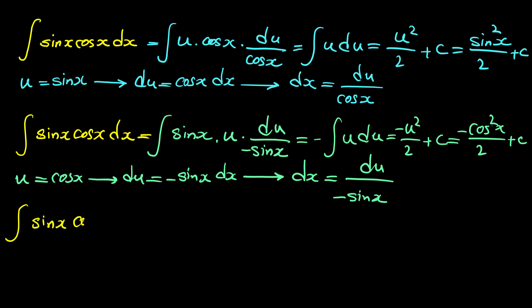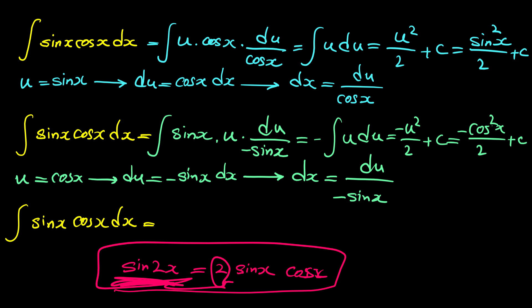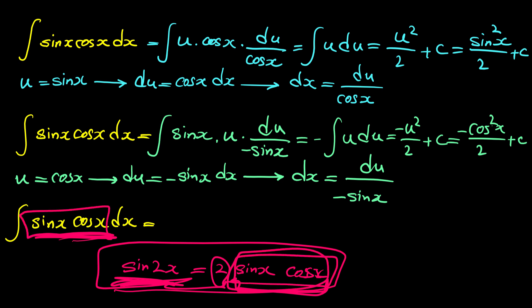The third method uses an important trigonometric double angle identity. If you remember from trigonometry, sine of 2x equals 2 sine x cosine x. Notice that sine x cosine x is exactly the expression we have in our integral.